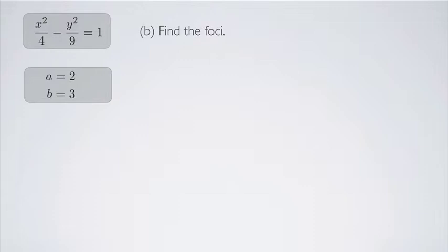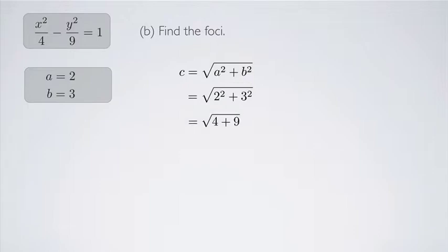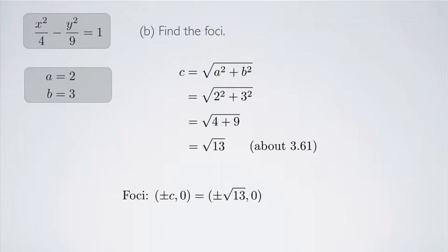Next, I'm going to find the foci. In order to find the foci, I need to calculate c, which is the square root of a squared plus b squared. So that's the square root of 2 squared plus 3 squared, which is the square root of 4 plus 9, giving the square root of 13, about 3.61. So my foci are plus or minus c comma 0, which is plus or minus the square root of 13 comma 0. Note that if the hyperbola had been oriented the other way, the foci would have been 0 comma plus or minus c.